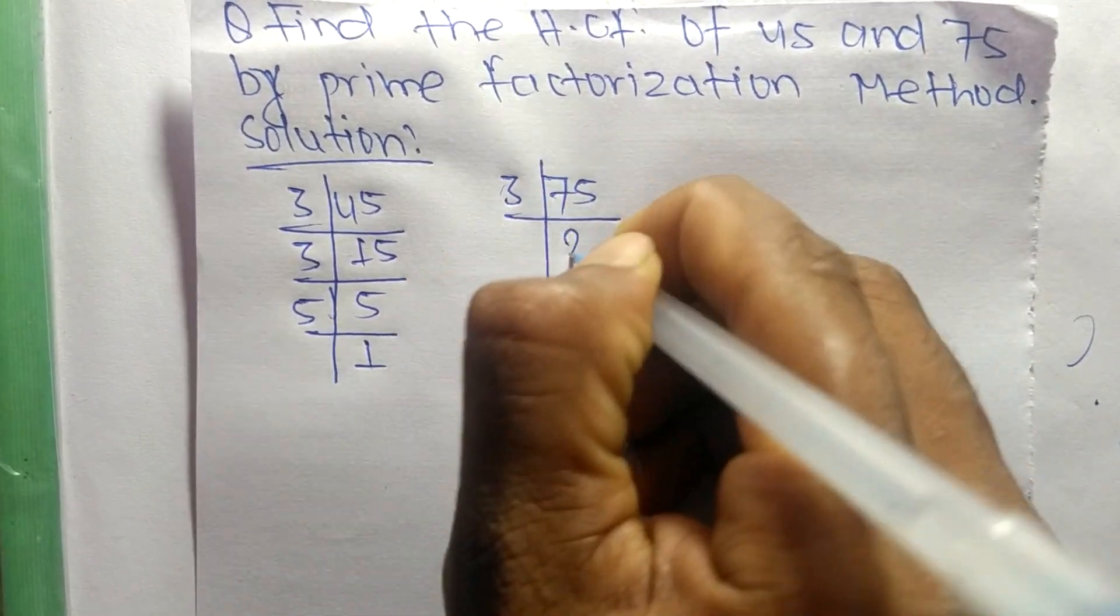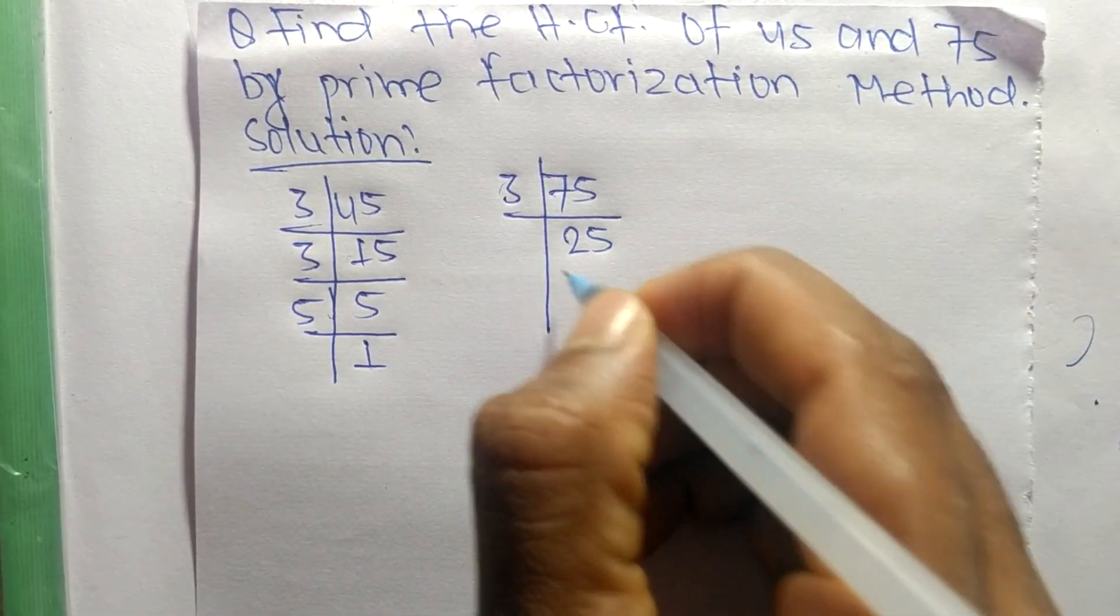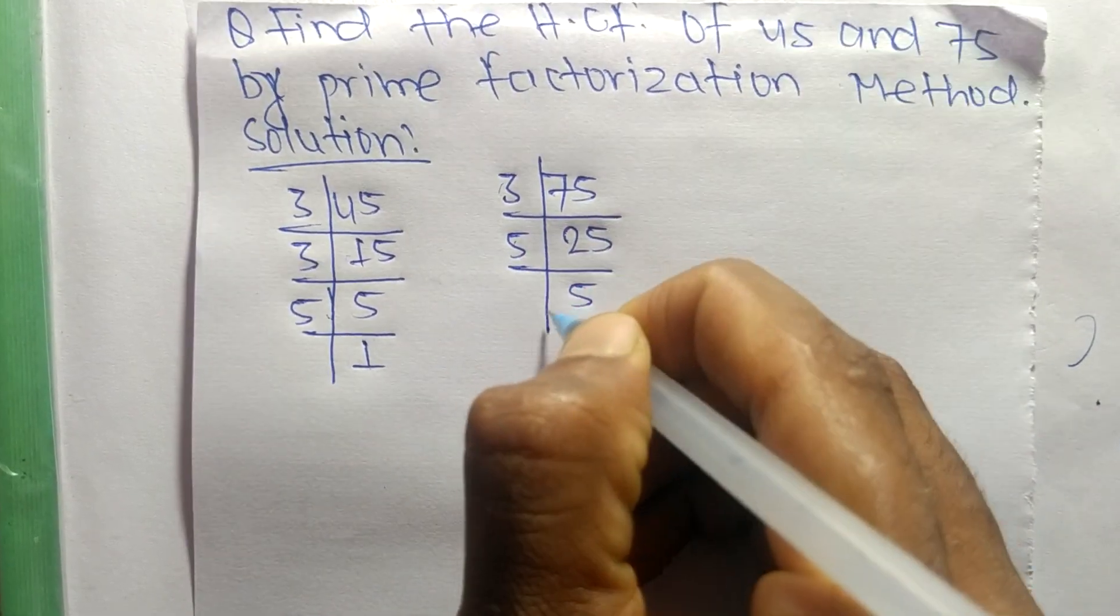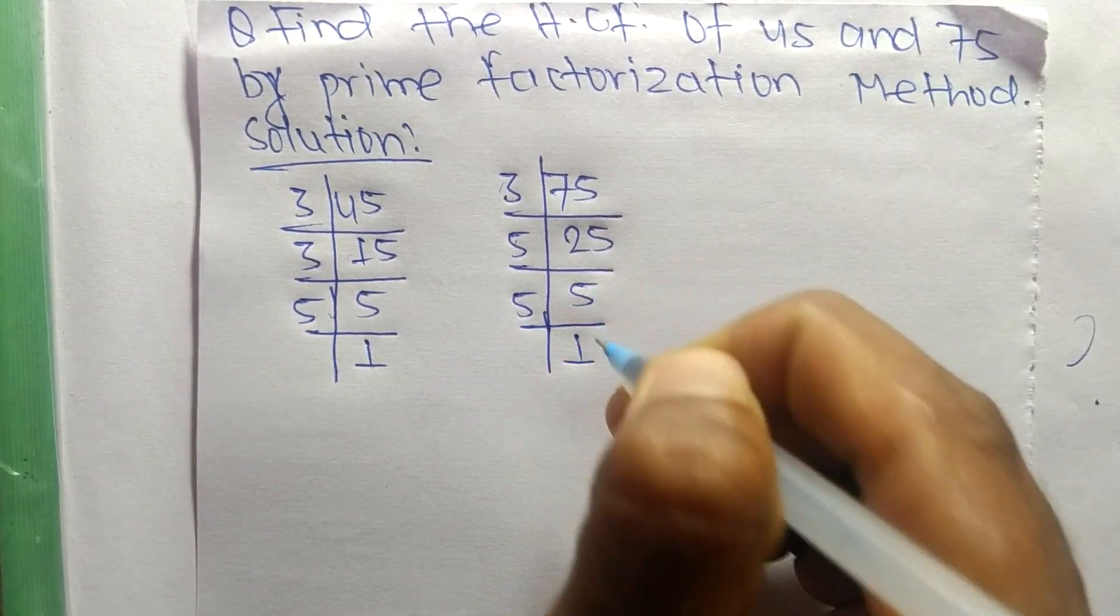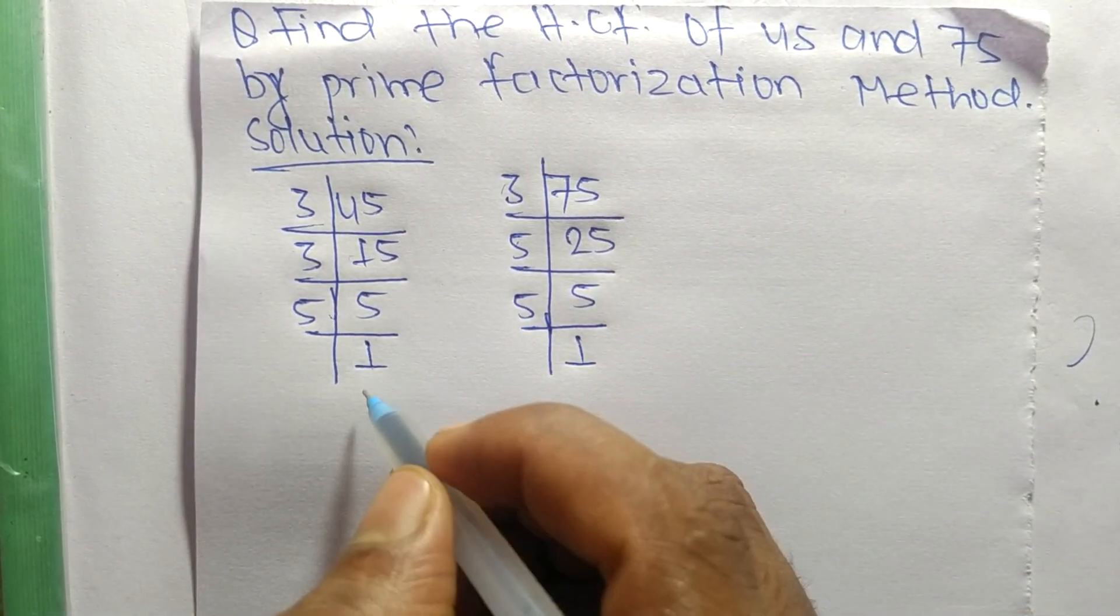3 times 25 means 75, 5 times 5 means 25, and 5 times 1 means 5. So now from these prime factors...